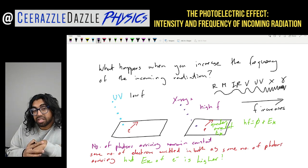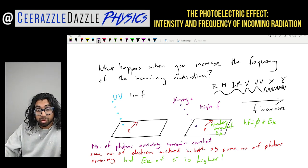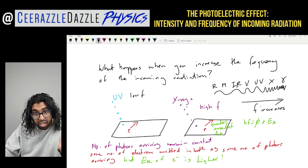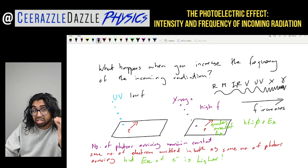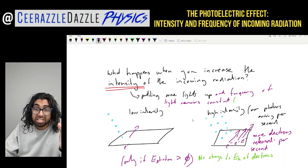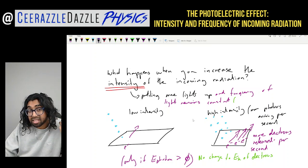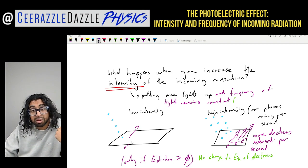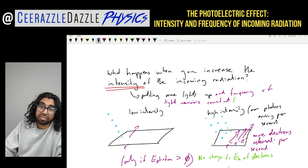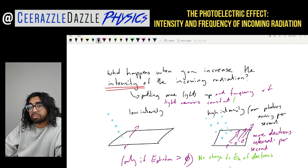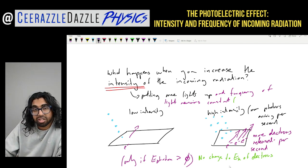So to summarise: if you increase the frequency of incoming radiation in the photoelectric effect, the same number of electrons are emitted per second but the kinetic energy is higher. If you increase the intensity, you are shining more photons onto the metal surface, so more electrons are emitted per second but with the same kinetic energy as before — and this only occurs if the incoming photon energy is greater than the work function. That's it for another session of Surrasle Dazzle Physics — hit the like and subscribe button and good luck in your studies!